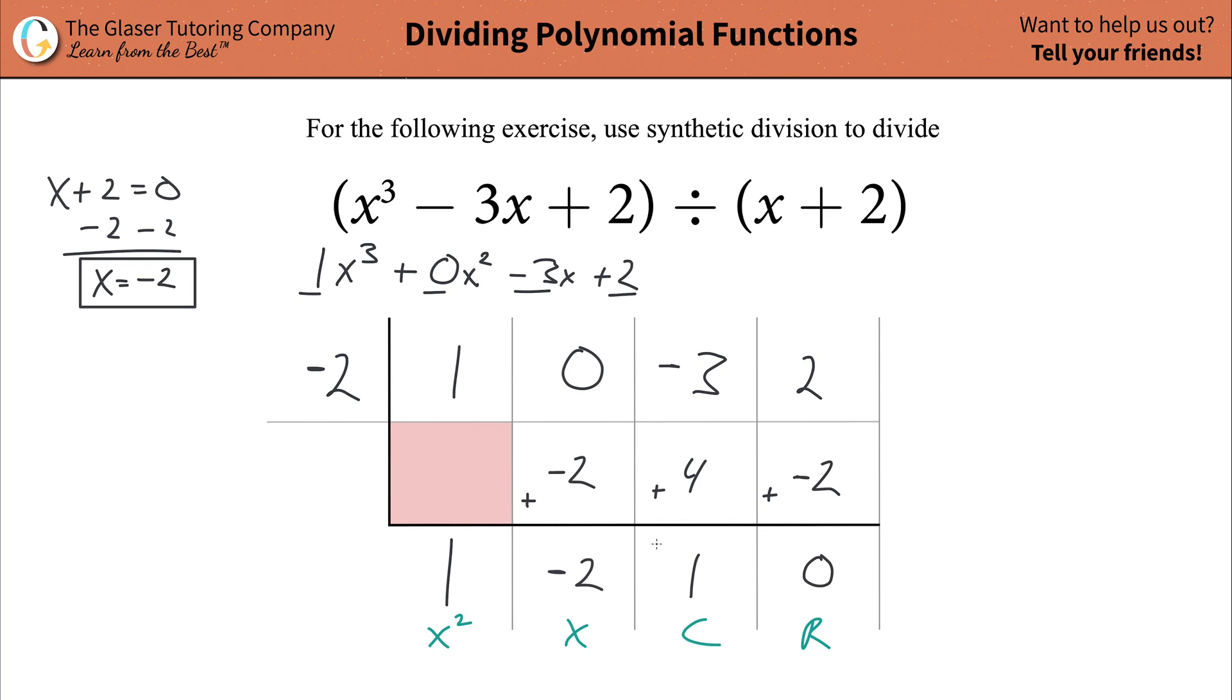And basically now from here, what you can start to do is write out your quotient. So what we have here is we have 1x squared, which is just the same thing as saying x squared. Then we have minus 2x. Then we have plus 1. And then we have plus 0. This is your remainder, plus 0 divided by whatever your divisor is, x plus 2. Now, obviously, 0 divided by anything, I don't care what that anything is, the whole thing is just 0, right? So you can kind of eliminate that. So your quotient here is just x squared minus 2x plus 1. And that would then be the answer.